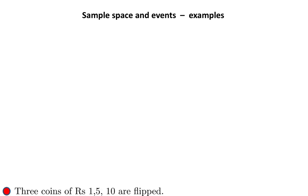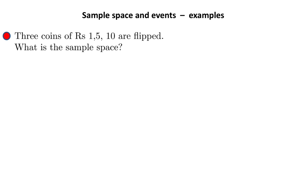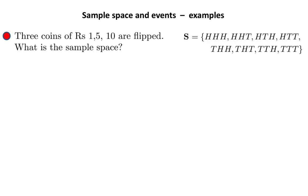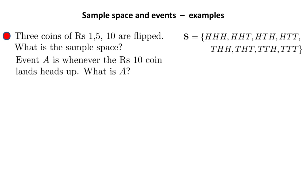Let's now take some definite examples of random experiments, sample spaces, and events. Consider three coins of one rupee, five rupees, ten rupees that are flipped. What is the sample space? Well, in each case you'll get a heads or a tail, and the sample space contains eight elements — heads-heads-heads all the way down to tails-tails-tails. These are all possible outcomes. Now suppose we call event A as whenever the ten-rupee coin lands head up. A comprises these four elements.